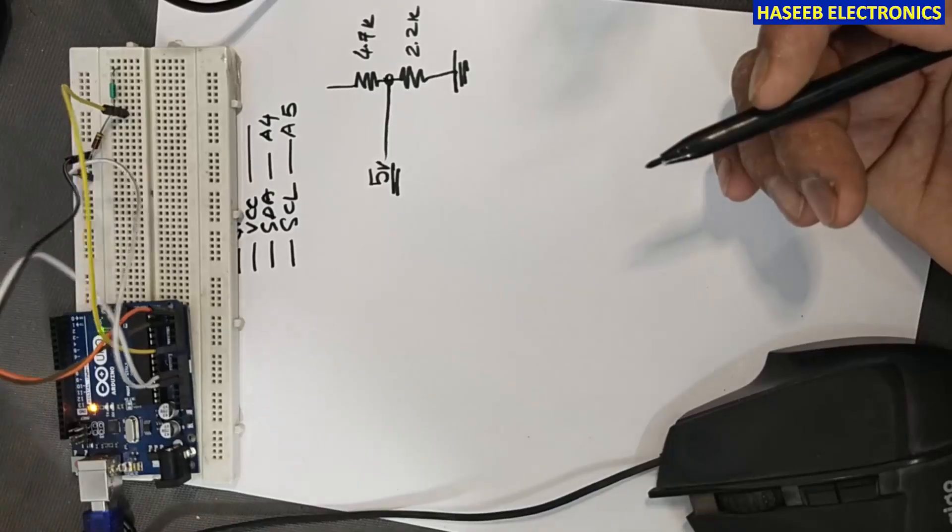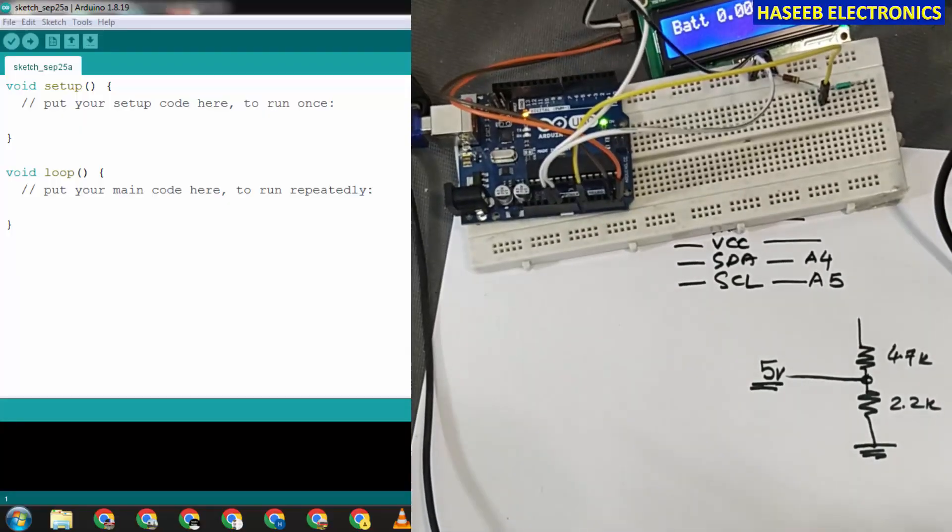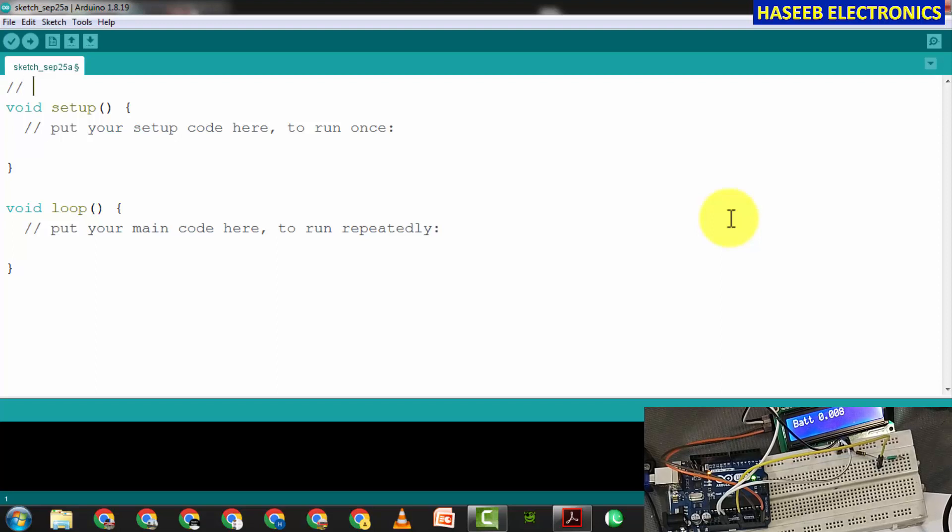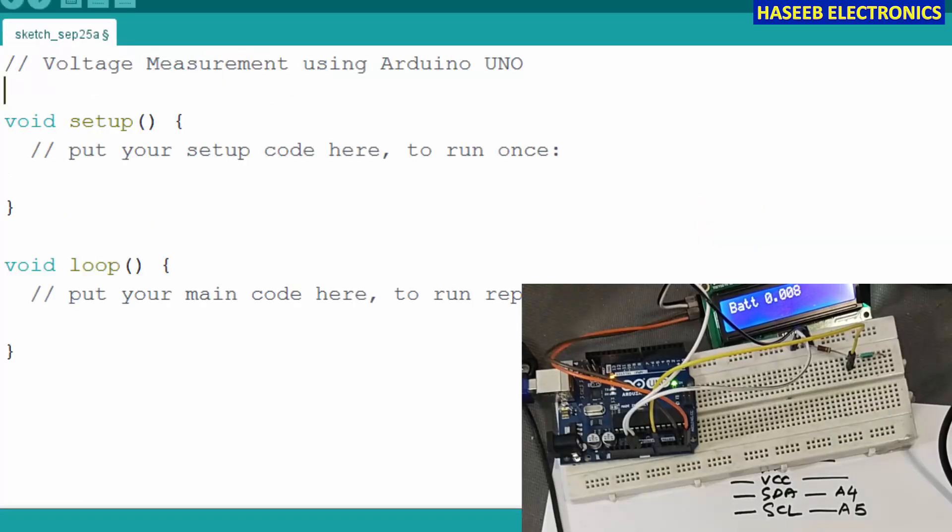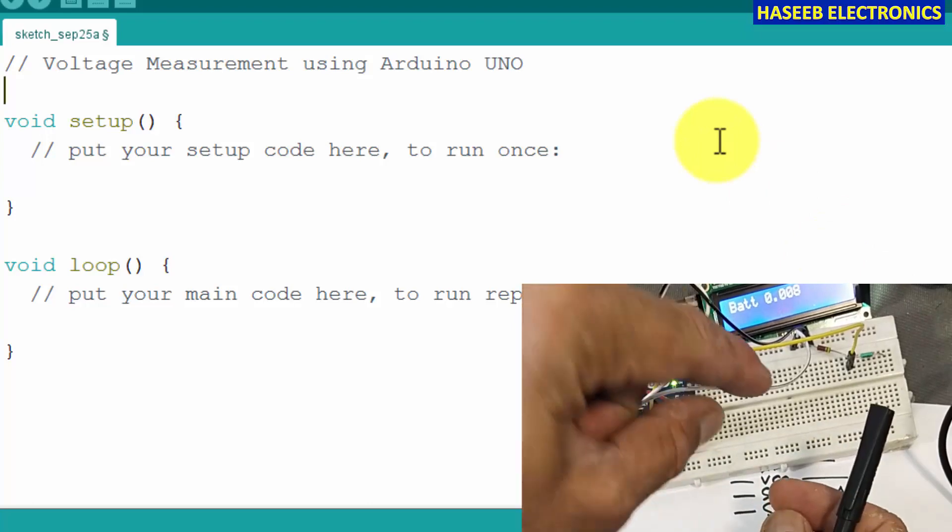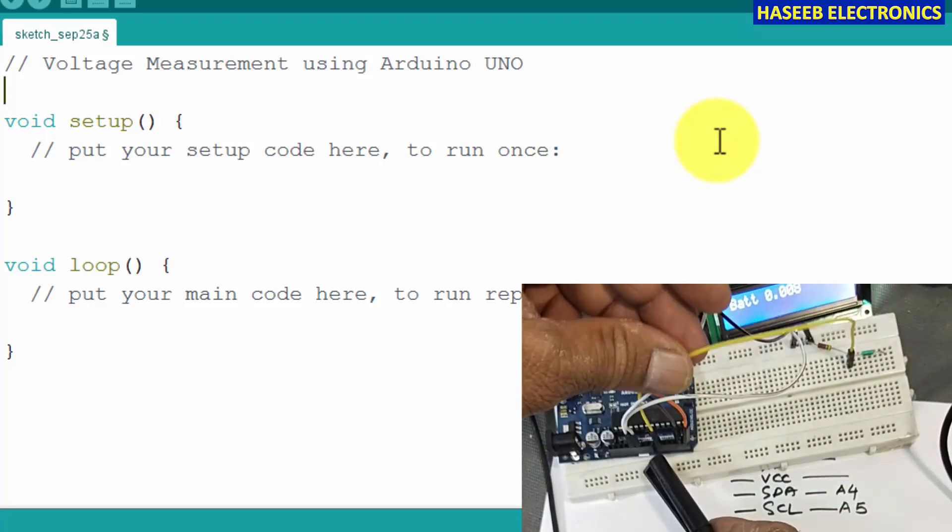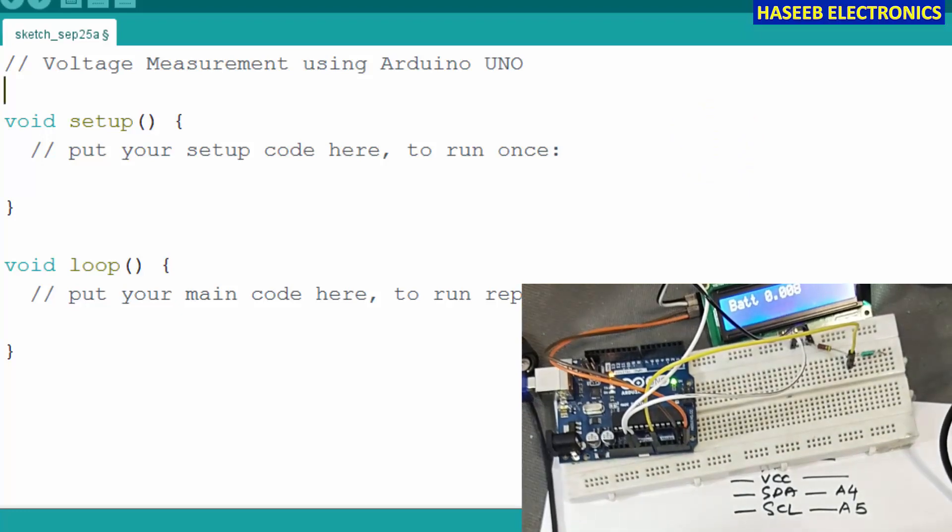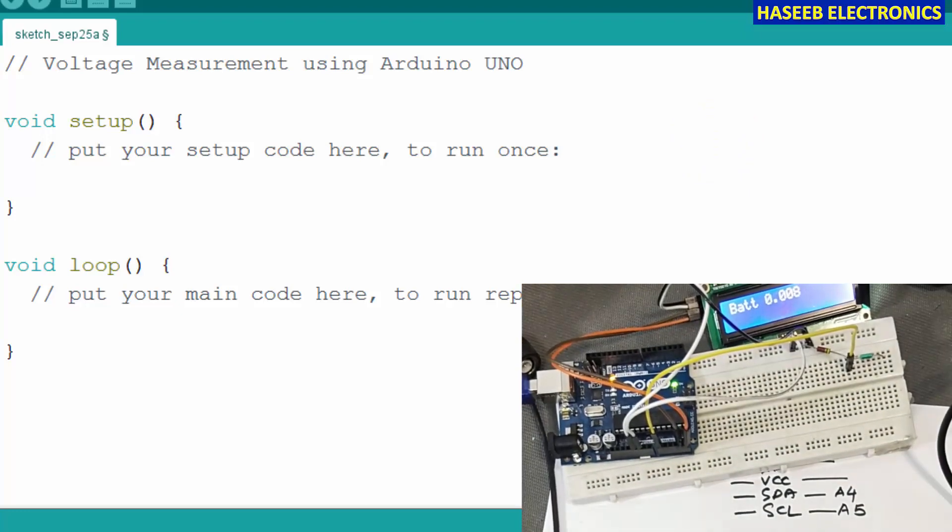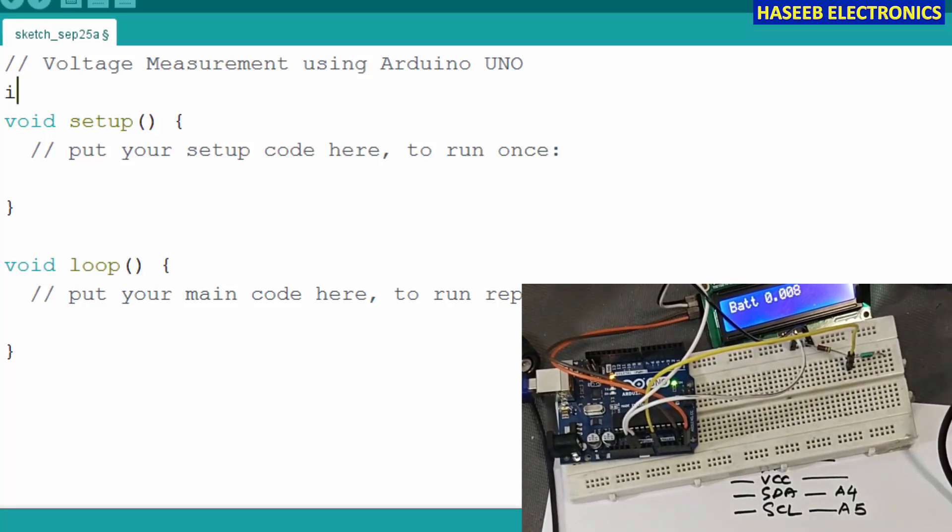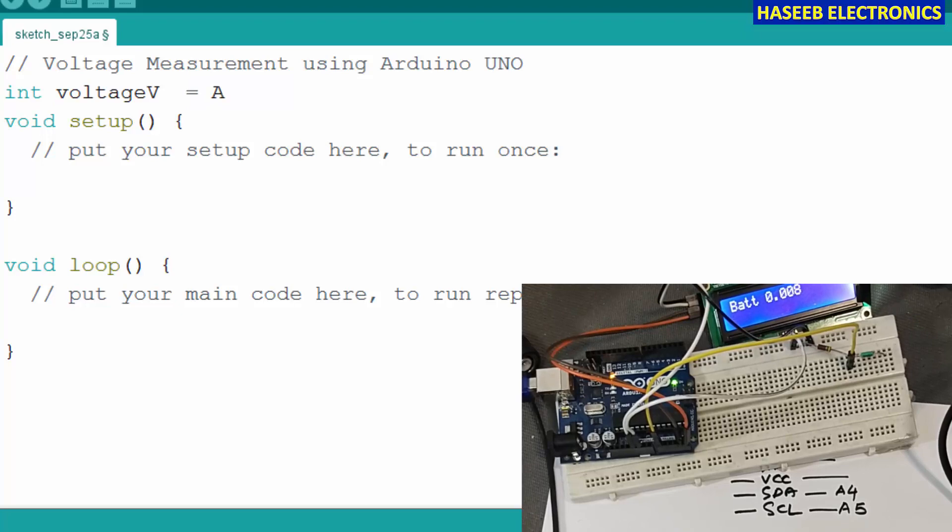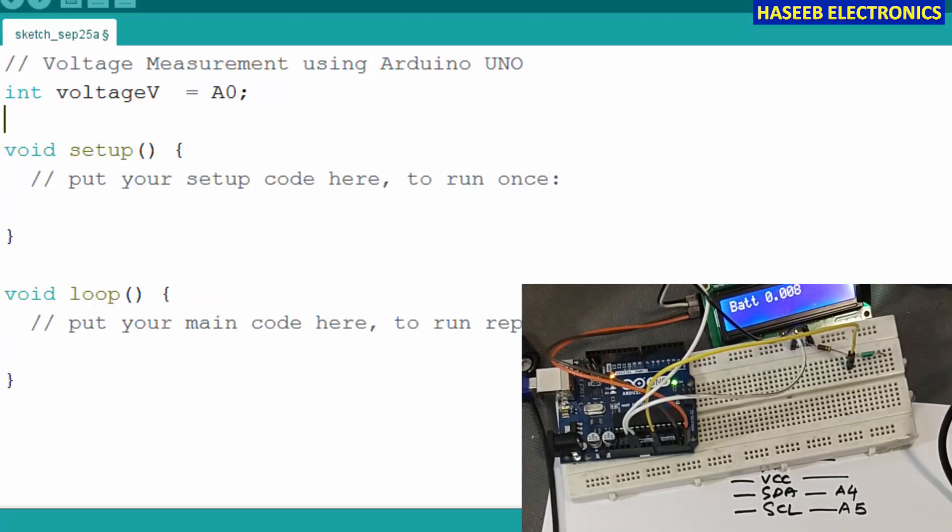Let's write the code. In the top we will write comment: voltage measurement using Arduino. Now what we need to define: we are going to apply this voltage to A0 pin. A0, analog 0, that is our input pin. We will define some name. We can say 'voltage value'. Int voltage value is equal to A0. That is our input pin. Terminate with the semicolon. It is the input pin.